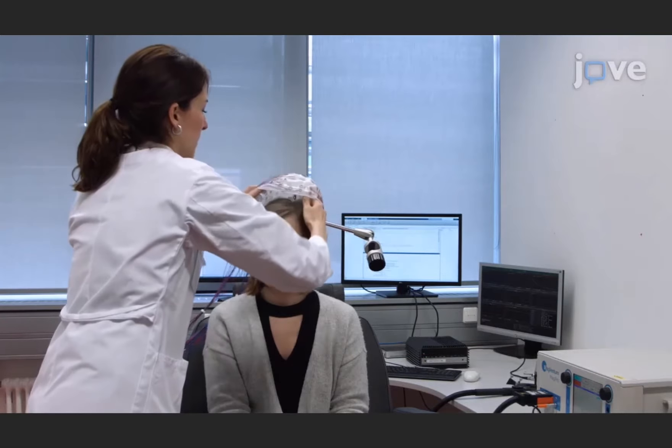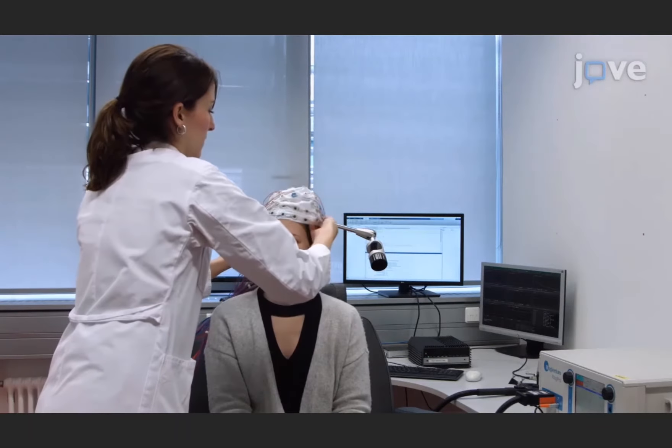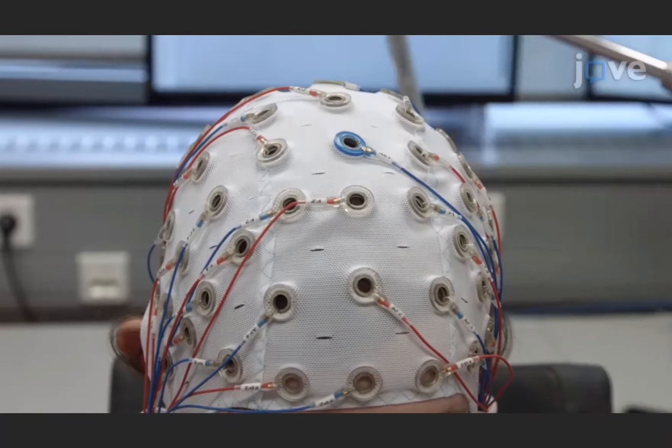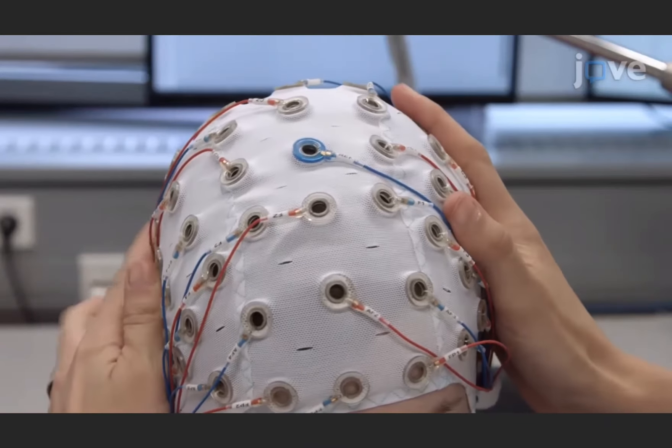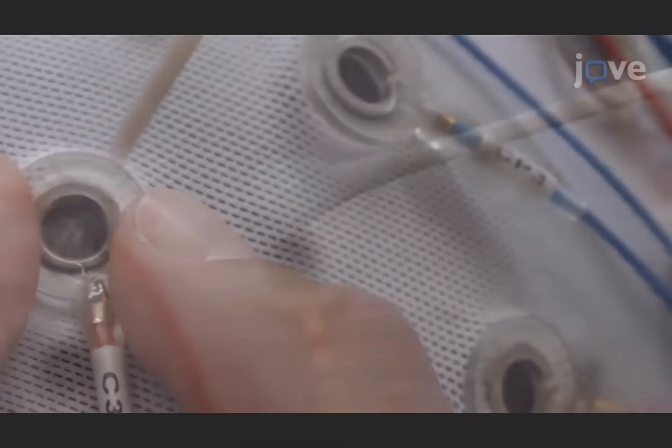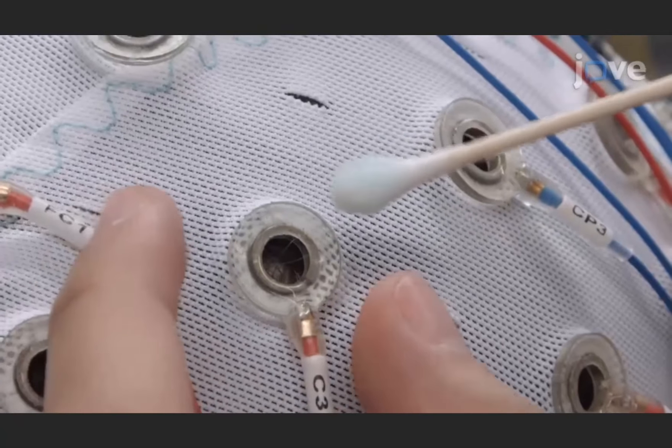When the system is ready, place an appropriately sized EEG cap on the head of the study participant and use measuring tape to position the cap correctly. Push the hair aside so that the scalp is visible and prepare the scalp with an abrasive gel application.